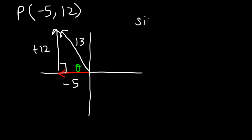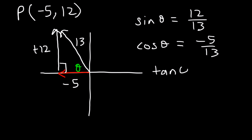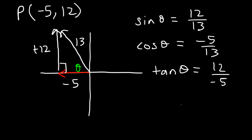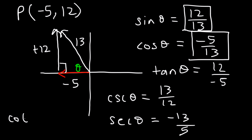Now let's go ahead and find all six trigonometric functions. Sine theta, which is y over r — opposite divided by hypotenuse — is positive 12 over 13. Cosine theta, which is the adjacent side divided by the hypotenuse, is negative 5 over 13. Tangent theta, opposite divided by adjacent, is 12 over negative 5. Once you have these three, you can find the reciprocals. Cosecant is 13 over 12. Secant, the reciprocal of cosine, is negative 13 over 5. And cotangent is negative 5 over 12.